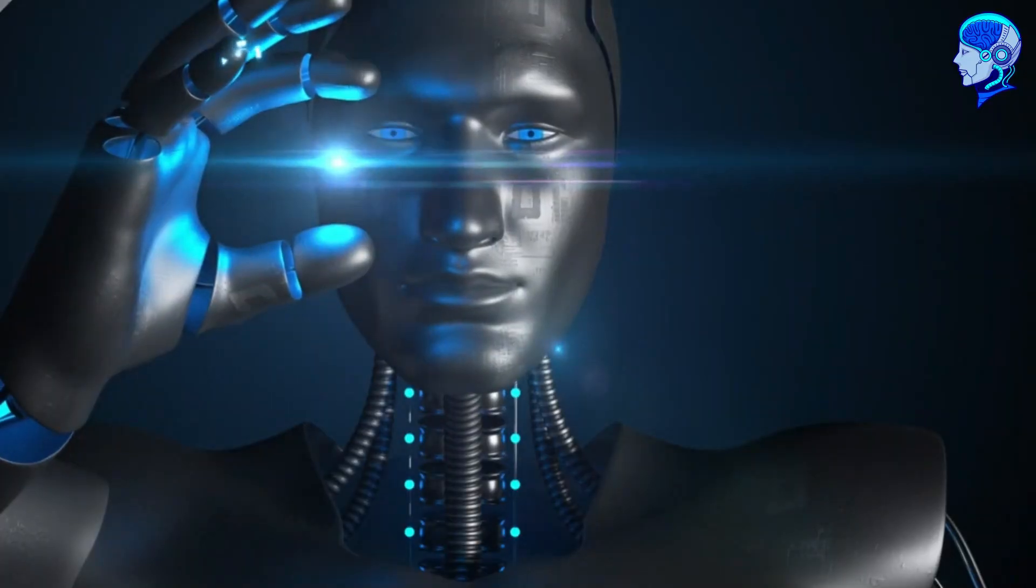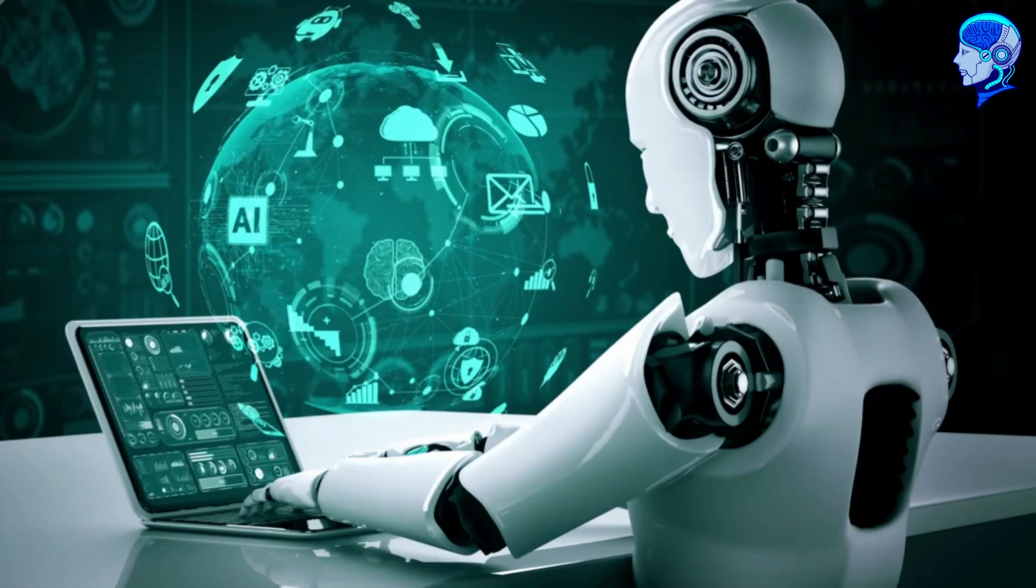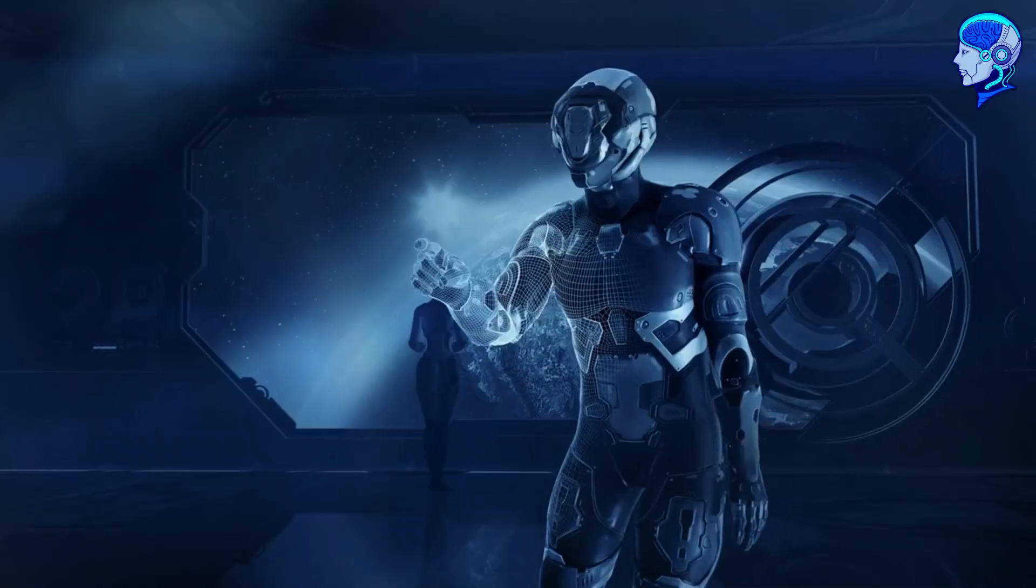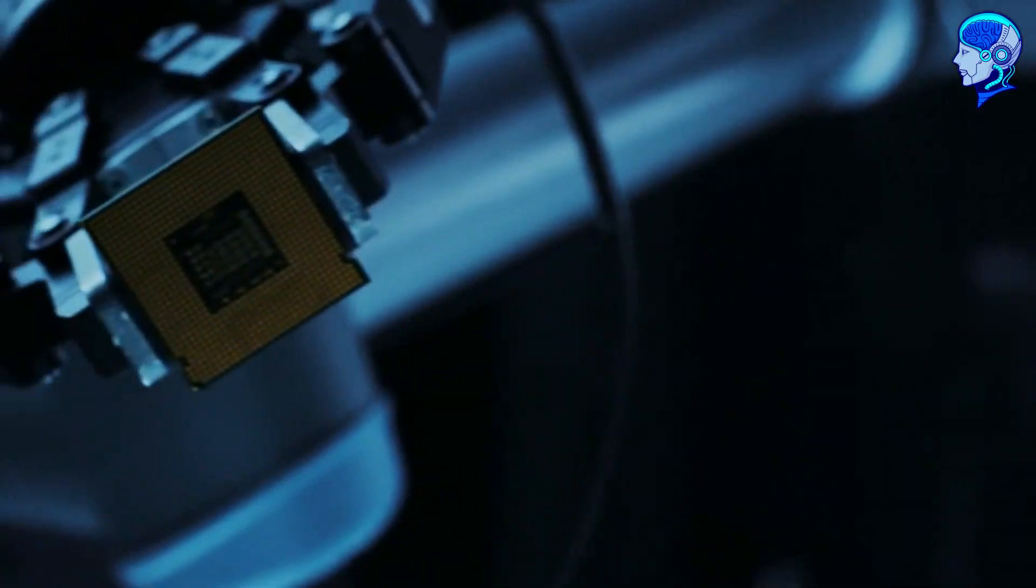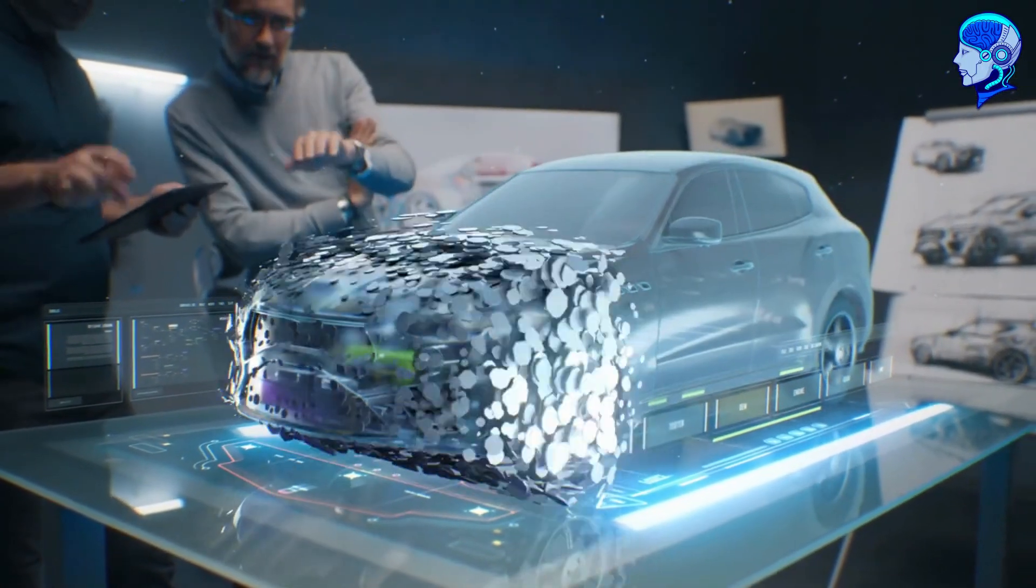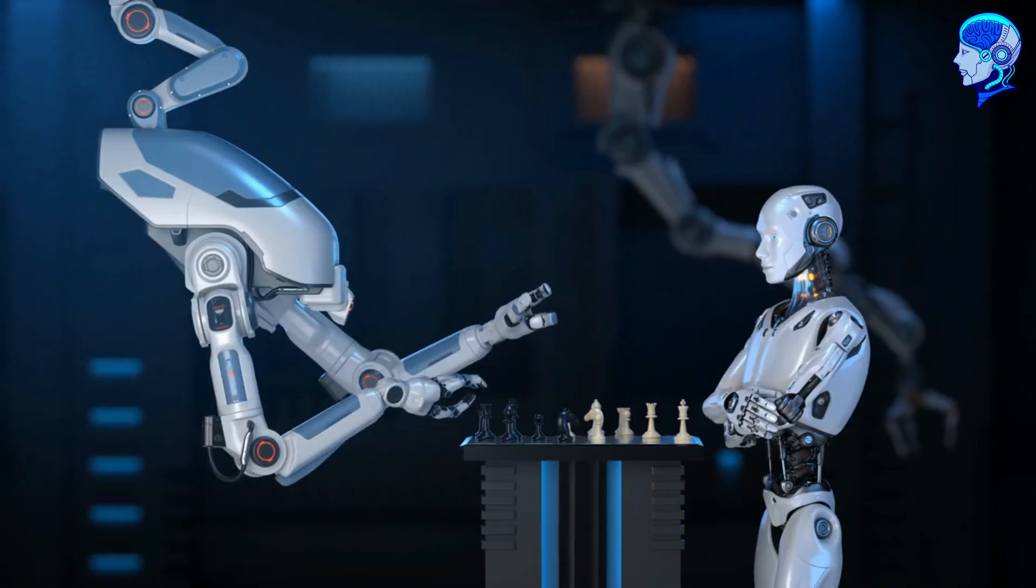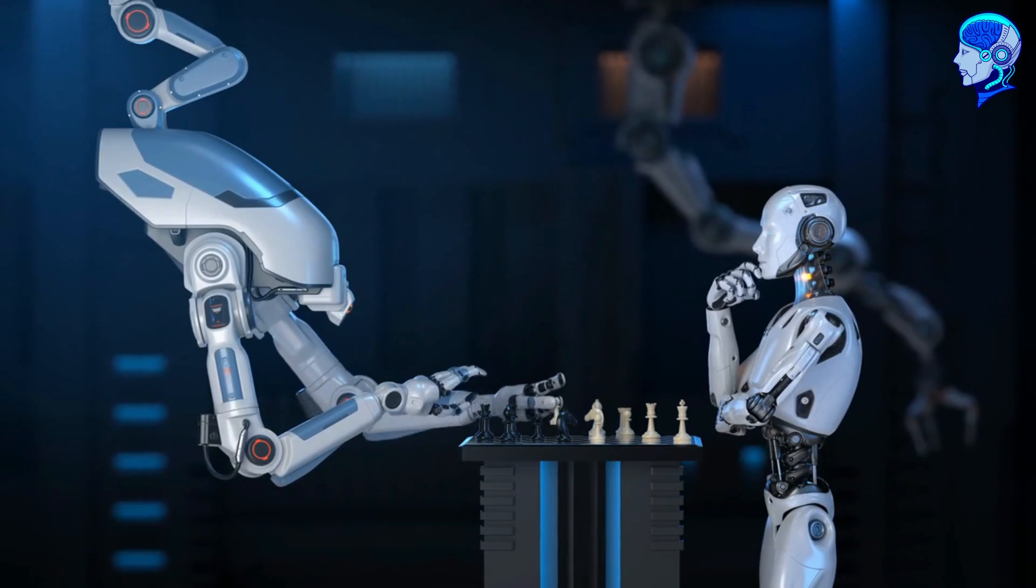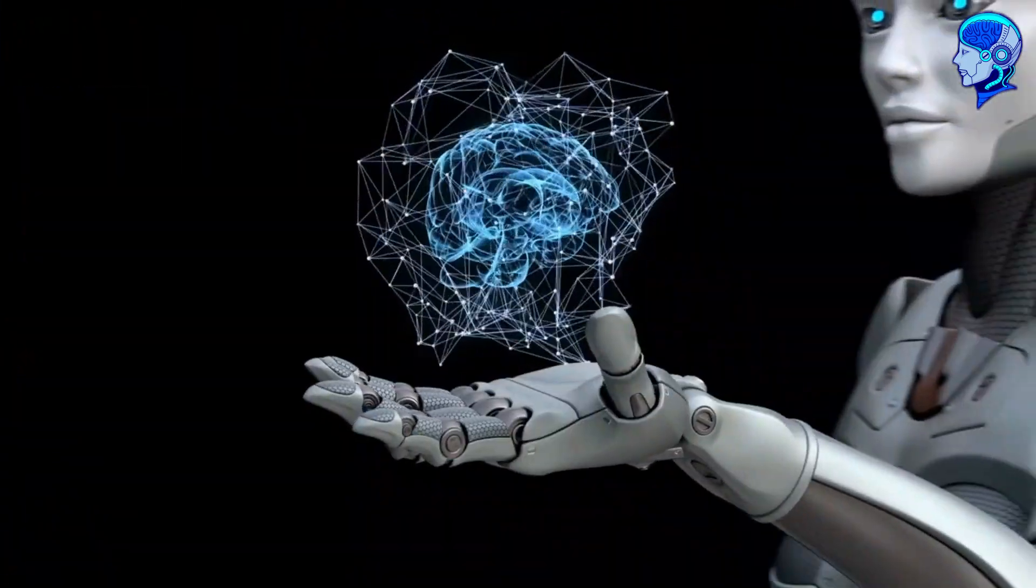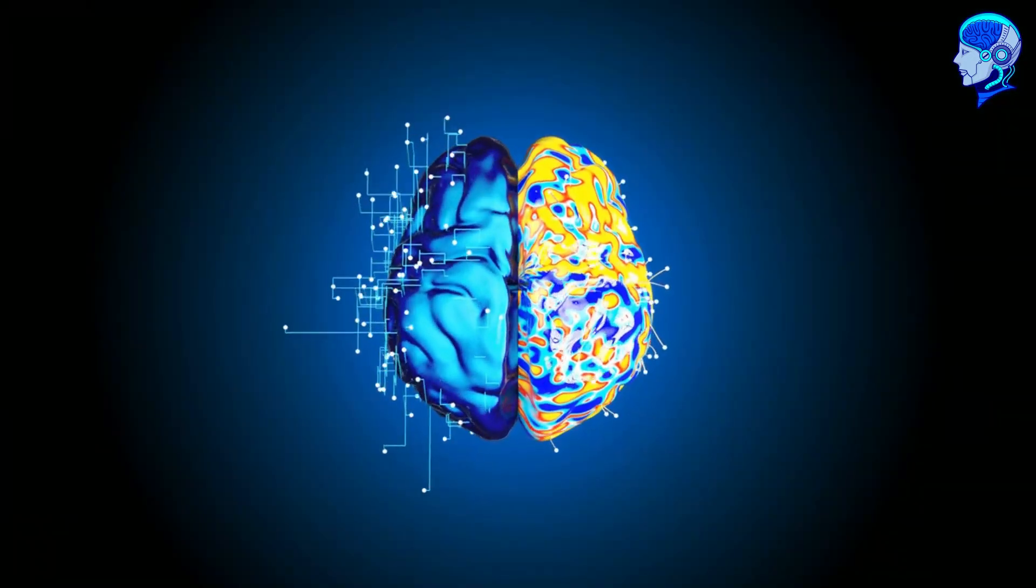The evolution of artificial intelligence spans 10 stages, each characterized by significant advancements, challenges, and implications. From its theoretical origins to practical implementations, AI has reshaped industries, transformed society, and challenged our understanding of intelligence. As we embark on the next phase of AI's evolution, it is essential to navigate ethical, legal, and societal considerations, while harnessing its transformative potential for the benefit of humanity.